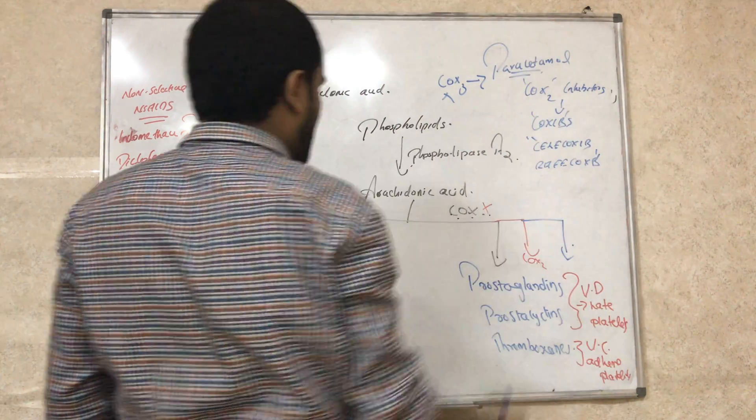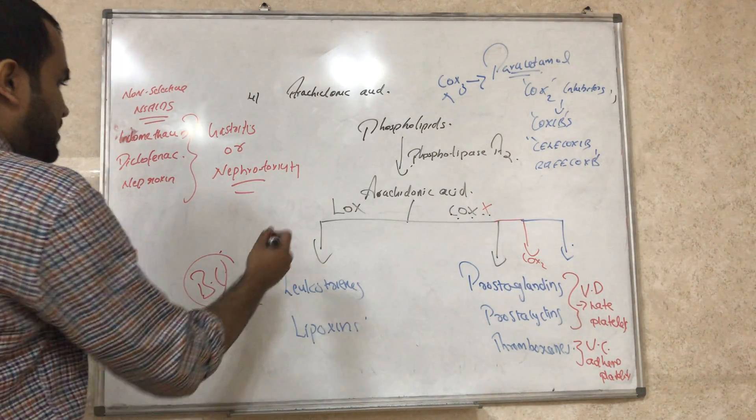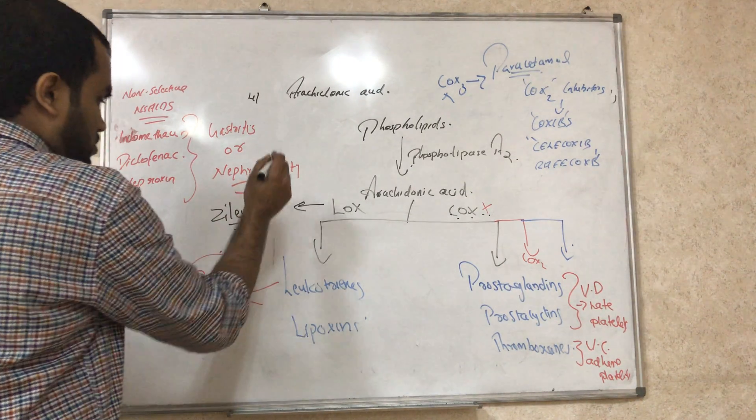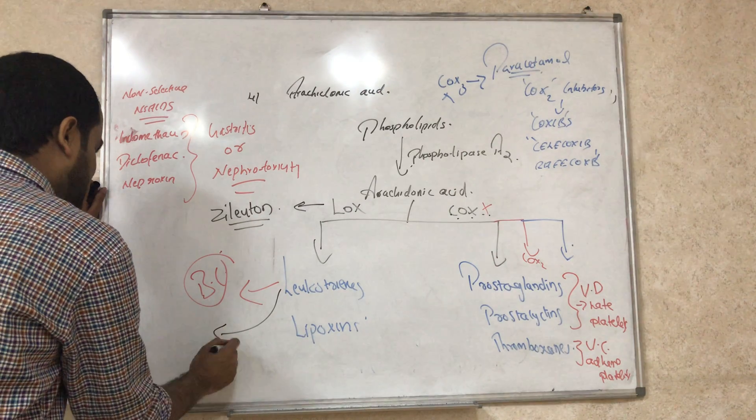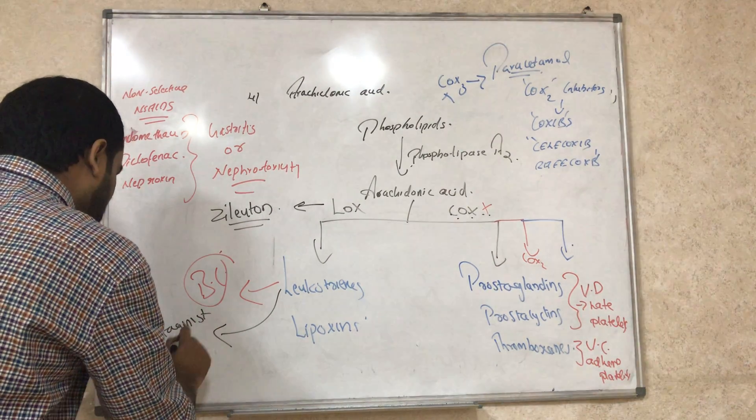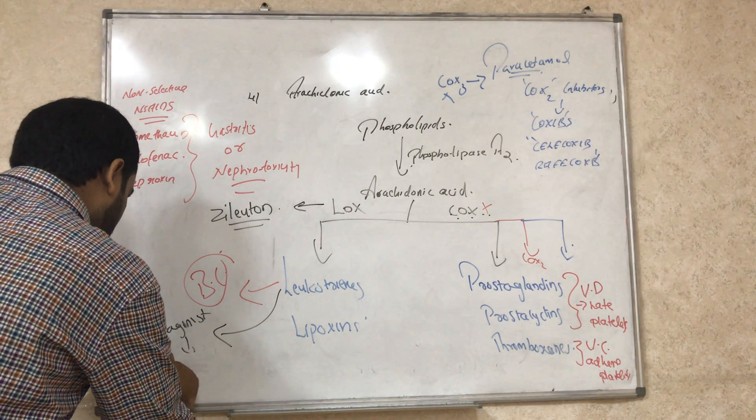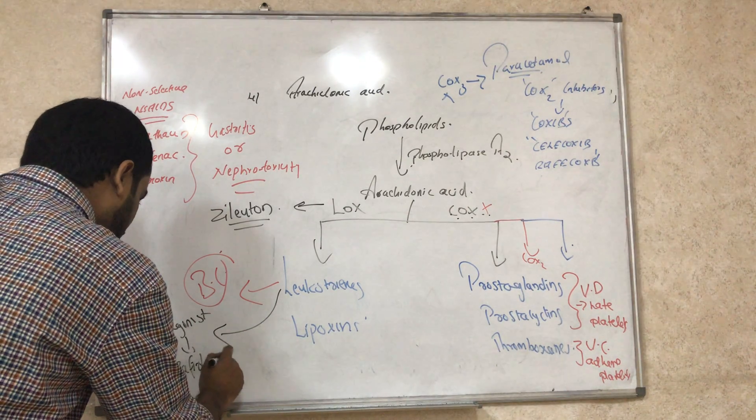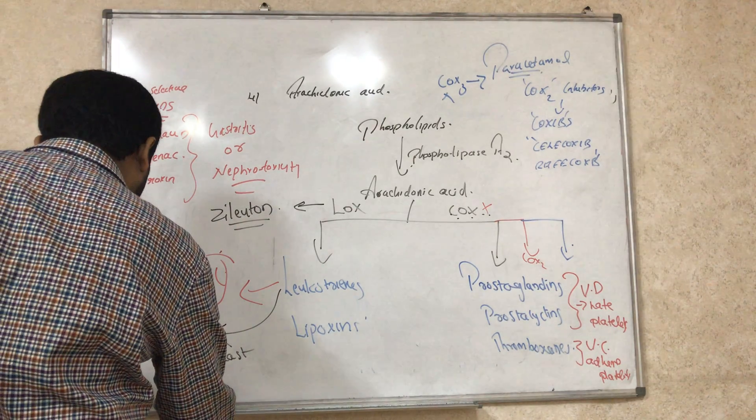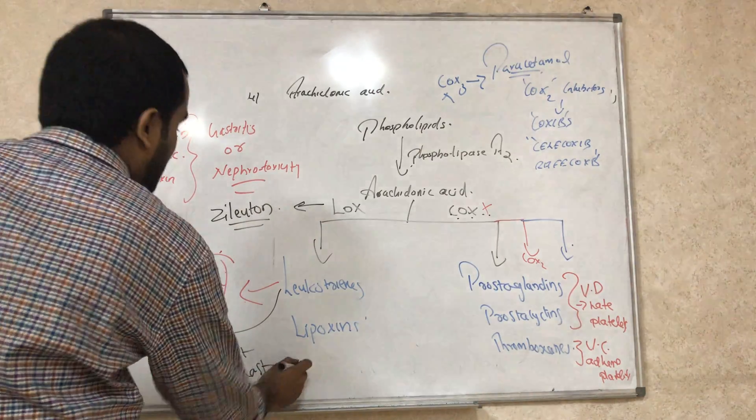Remember, so these are the mediators I just added here. And if you want to study about LOX inhibitors, we have a drug called zileuton. They will inhibit the LOX. And if you want to inhibit leukotrienes, antagonists will block leukotriene receptors like zafirlukast or montelukast. These all are leukotriene antagonists, clear?